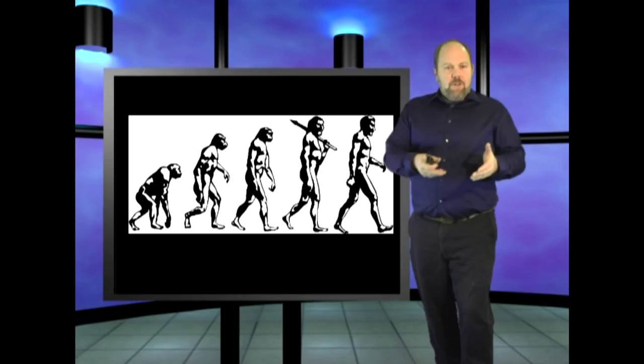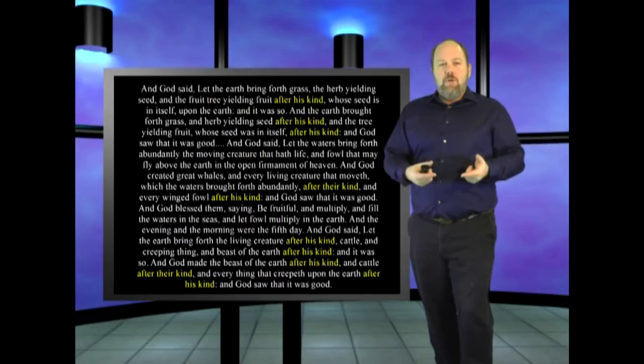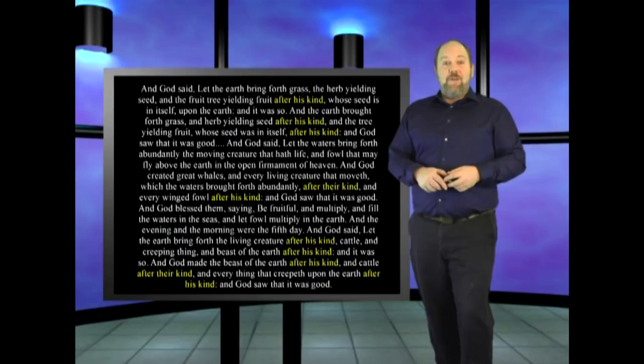According to evolution, life is supposed to change over time. According to the biblical account of creation, ten times in the first chapter of Genesis, it states that God created all life to reproduce after its kind. In other words, dogs will turn into dogs, cows will turn into cows, humans will turn into humans, and bacteria will turn into bacteria.